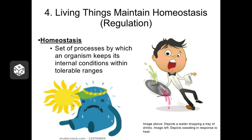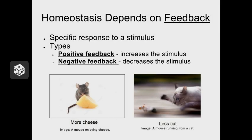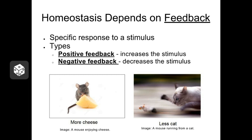Diseases, injuries, and disorders are things that push our bodies out of balance, and so sometimes these things are referred to as homeostatic imbalances. Maintaining a homeostatic balance depends on something known as feedback — how your body responds to a particular stimulus. There are a couple of different kinds: positive feedback in general tends to increase the stimulus, whereas negative feedback tends to decrease the stimulus.